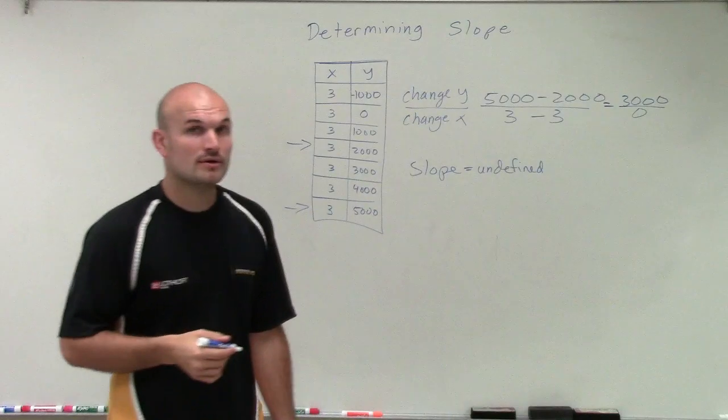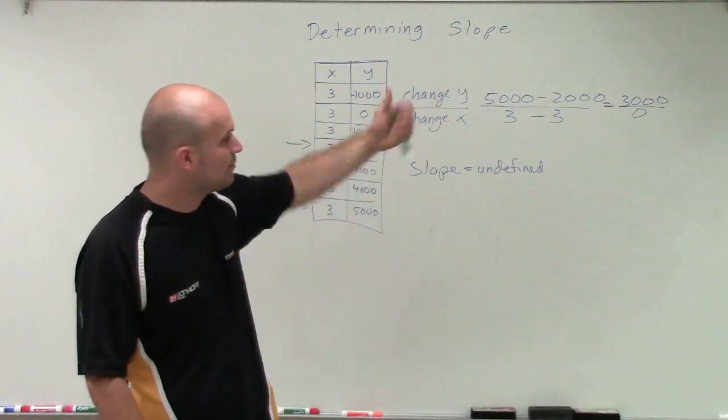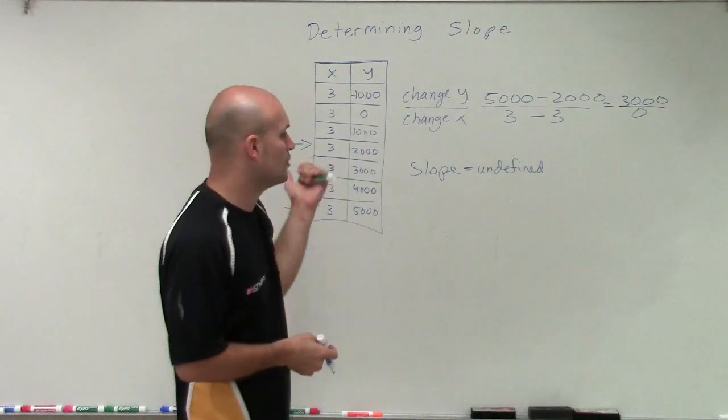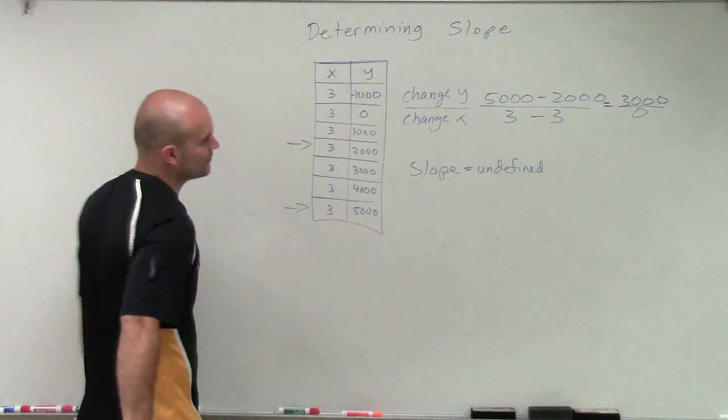It's not 0 because 0 was when we were dividing the number into 0. But when we're taking a number and dividing 0 into it, it's going to be an undefined slope, which will produce a vertical line at our x-coordinate of 3.